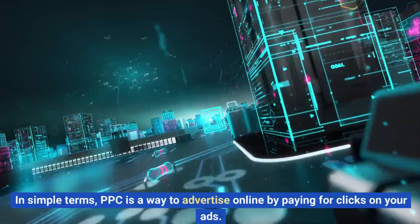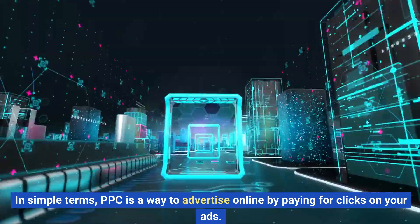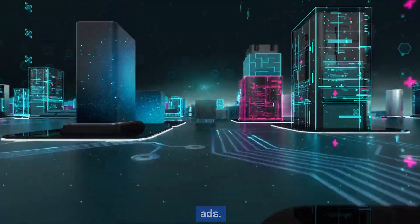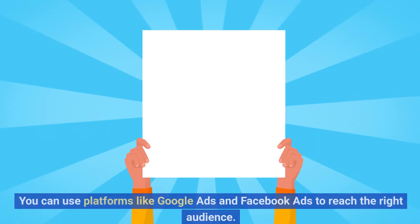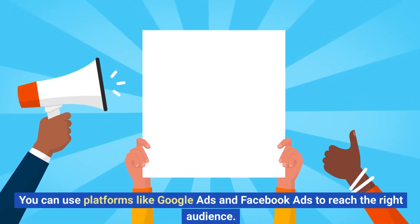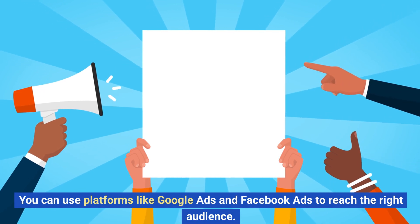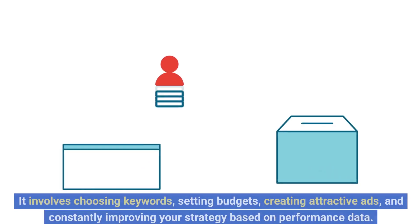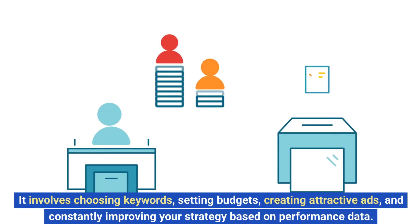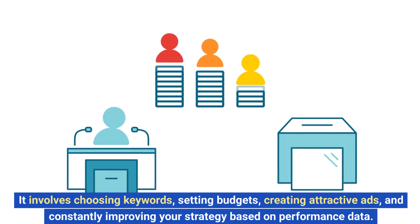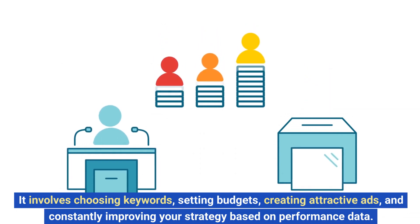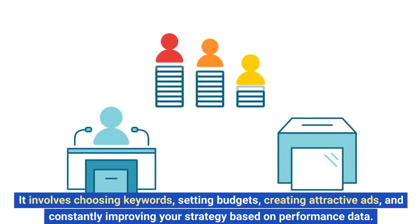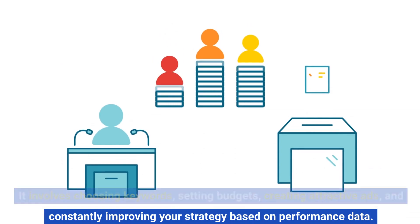In simple terms, PPC is a way to advertise online by paying for clicks on your ads. You can use platforms like Google Ads and Facebook Ads to reach the right audience. It involves choosing keywords, setting budgets, creating attractive ads, and constantly improving your strategy based on performance data.